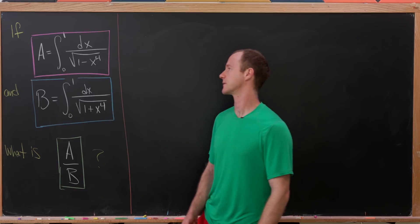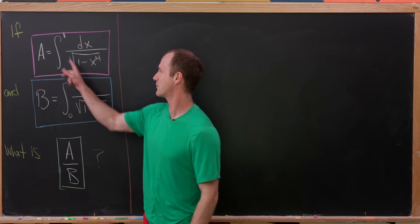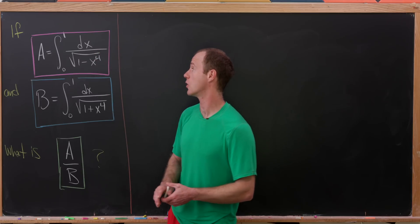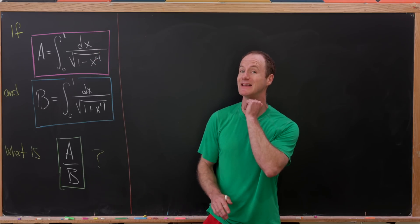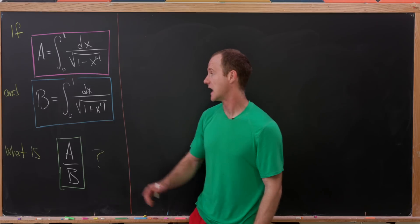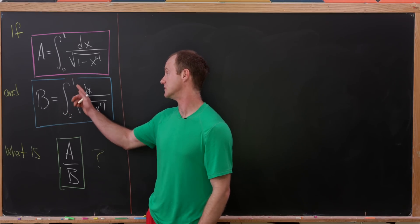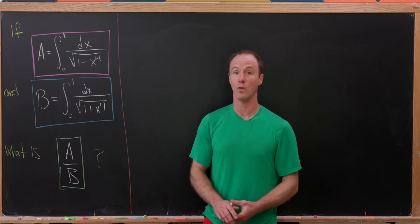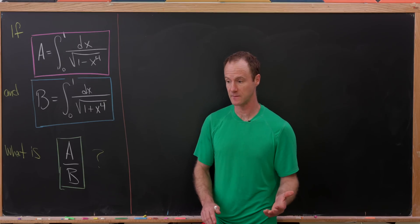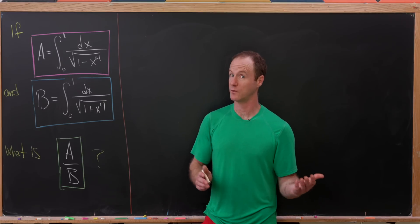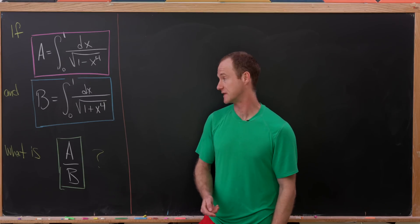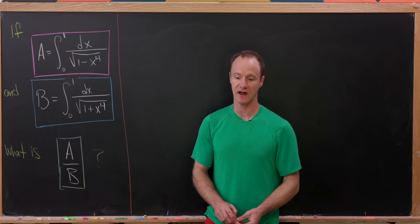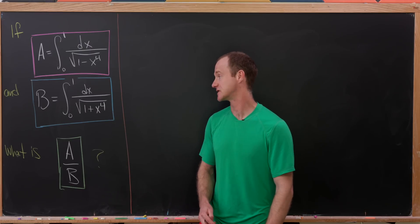So what are we going to do here? Let's set capital A equal to the integral from 0 to 1 of dx over the square root of 1 minus x to the 4th, and capital B equal to the integral from 0 to 1 of dx over the square root of 1 plus x to the 4th. We won't find the value of either of these integrals, but we will find the ratio of their values, and this has a nice result.